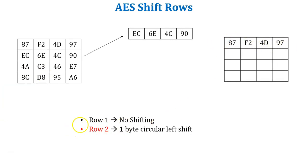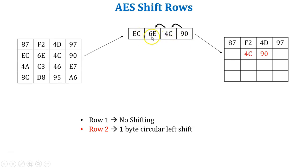Row 2 performs a 1-byte circular left shift. Starting from the right-hand side value 90, it moves 1 byte to the left. Then 4C performs 1 byte left shift, then 6E performs 1 byte left shift, and the last value EC moves to the last position of the row, completing the 1-byte circular left shift.